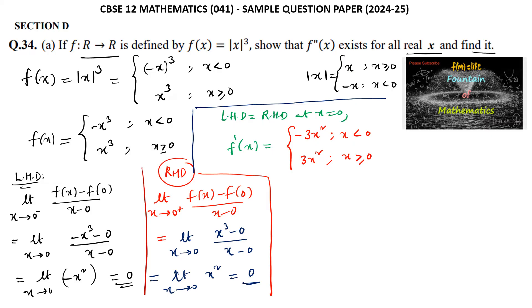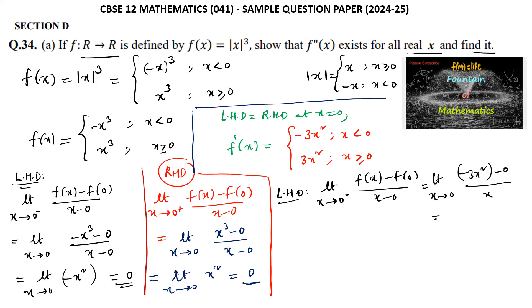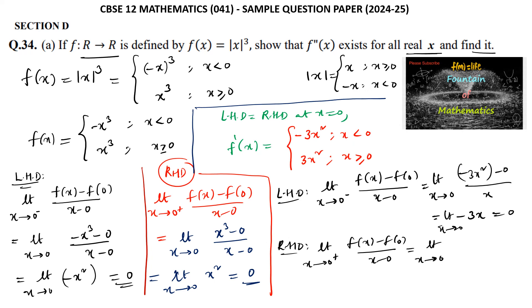Now to find the second derivative, we again check left-hand and right-hand derivatives of f'(x) at x = 0. Left-hand derivative: limit as x tends to 0⁻ of [-3x² - 0] / x = -3x, which tends to 0. Right-hand derivative: limit as x tends to 0⁺ of [3x² - 0] / x = 3x, which also tends to 0. So the left-hand derivative equals the right-hand derivative.